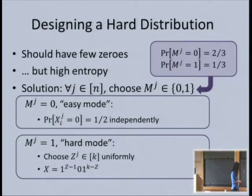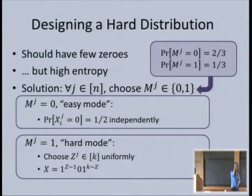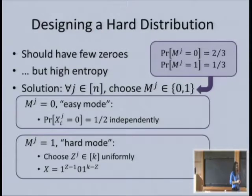The subscript on x_i is the player, and the superscript is the coordinate. So x^j is the j-th coordinate across everyone, and this is done independently for every coordinate.